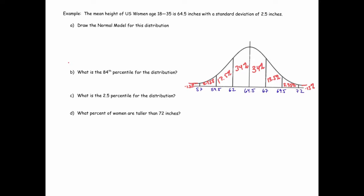This says what is the 84th percentile for the distribution? Well, it's the height below which 84% of the data lies. So if you're here, obviously you're at 50% if you're at the mean. If you go another 34%, if you go one standard deviation to 67 inches, that gets you to 84. So I'd say 67 inches is the 84th percentile.